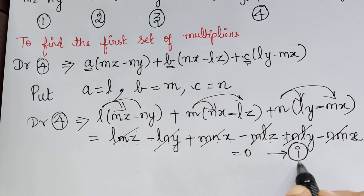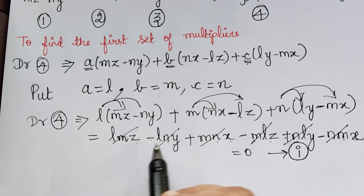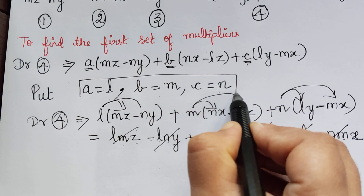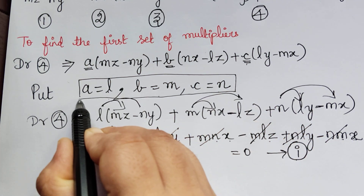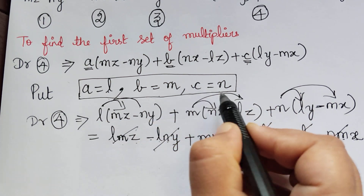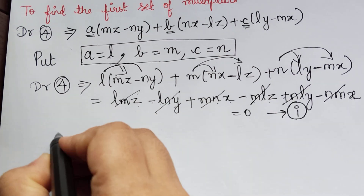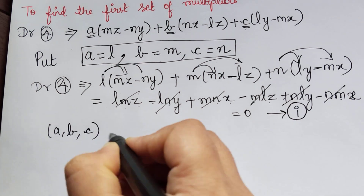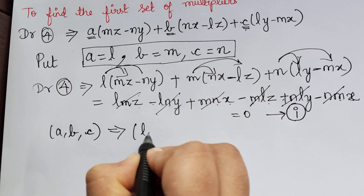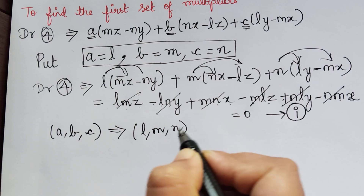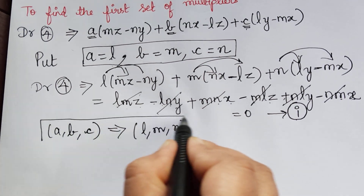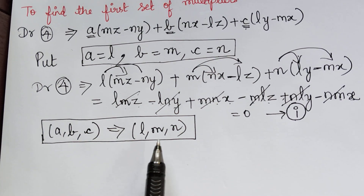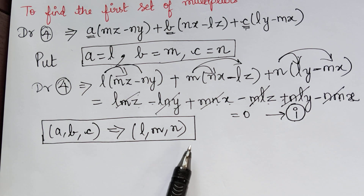So we have found the first set of multipliers: a equal to l, b equal to m and c equal to n. Therefore the first set of multipliers (a, b, c) is chosen as (l, m, n). In a similar way, let us find the second set of multipliers.